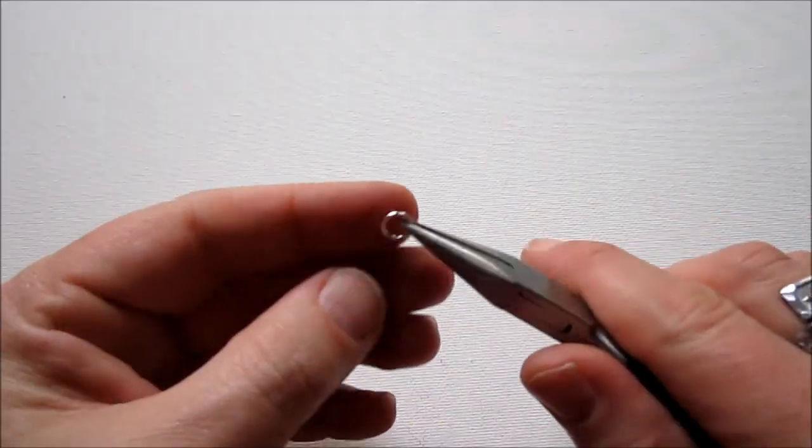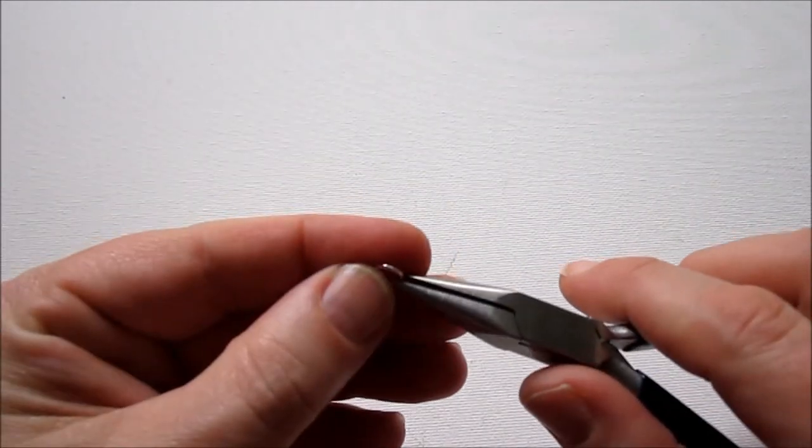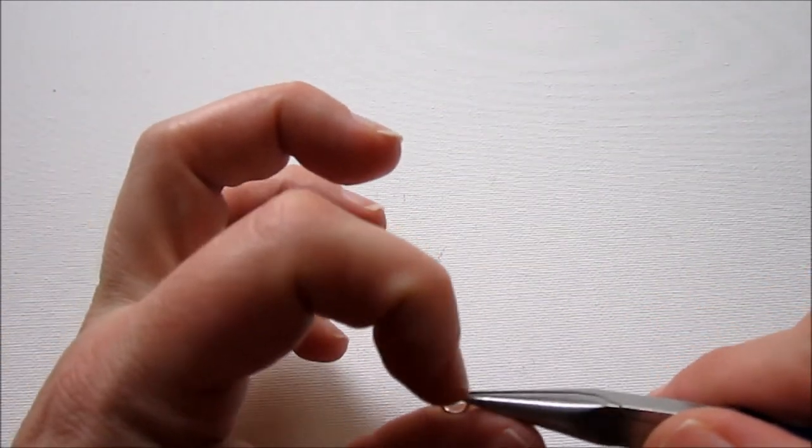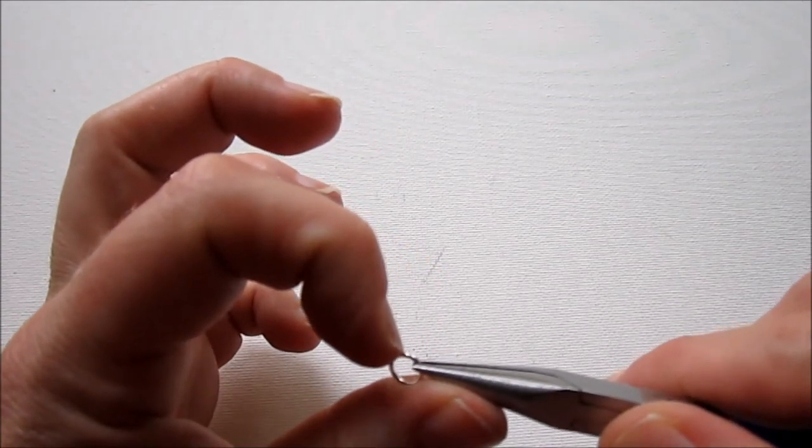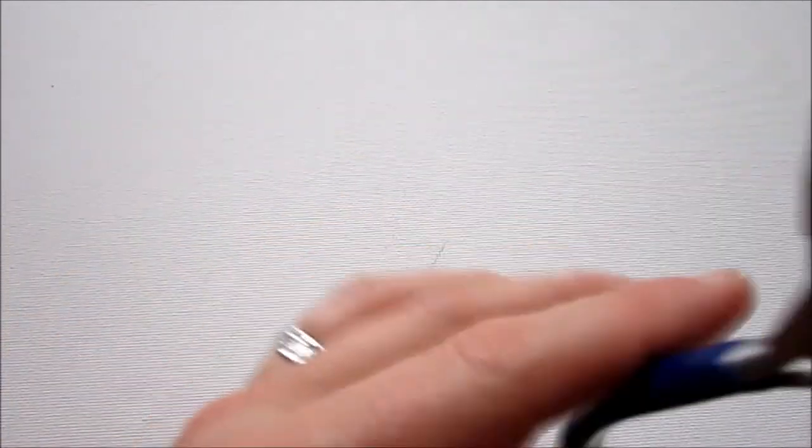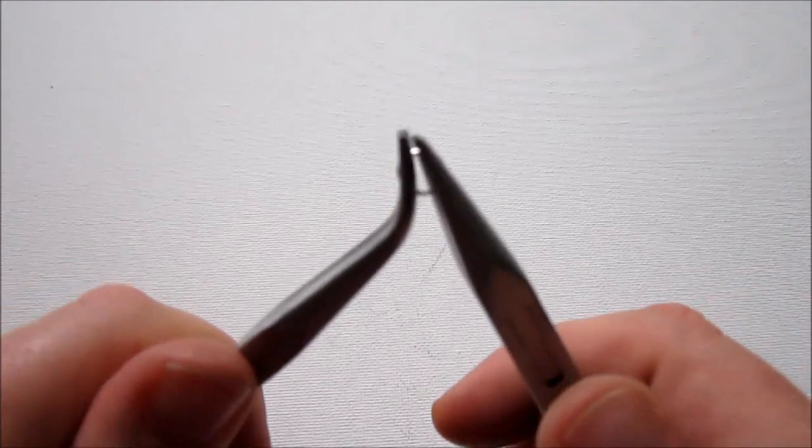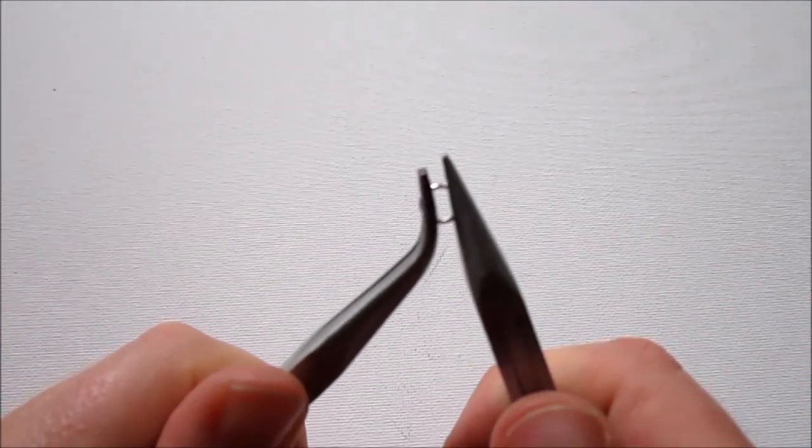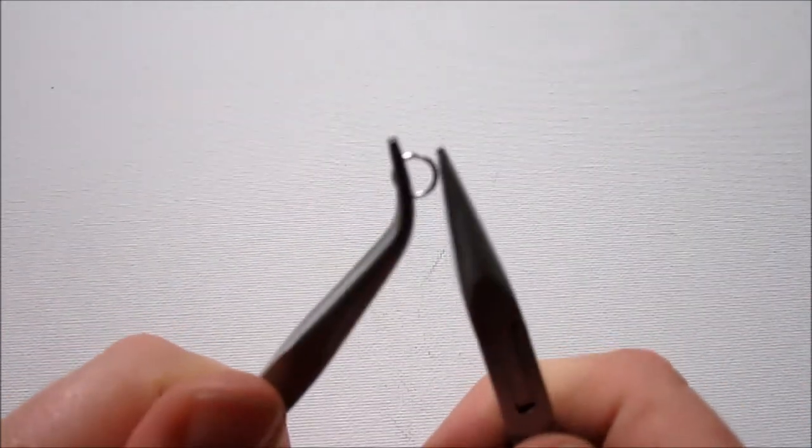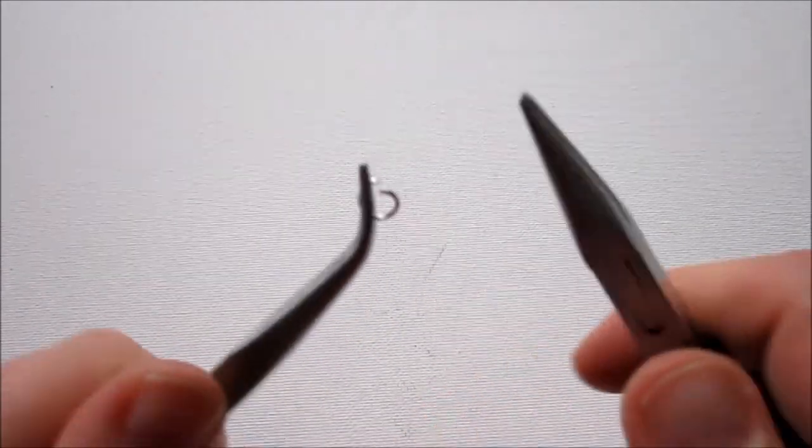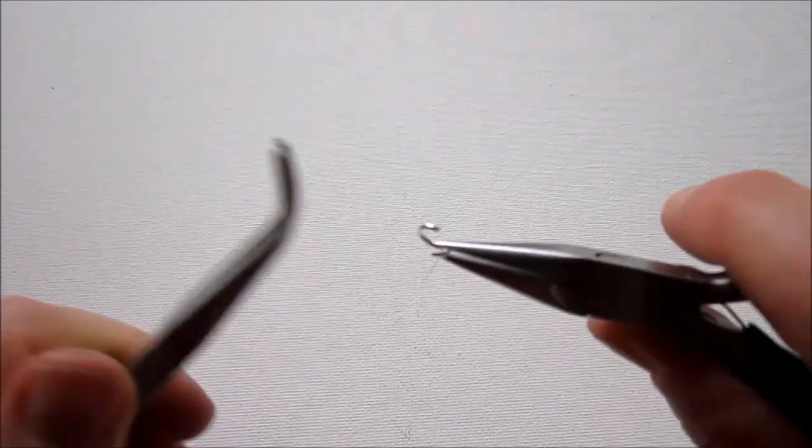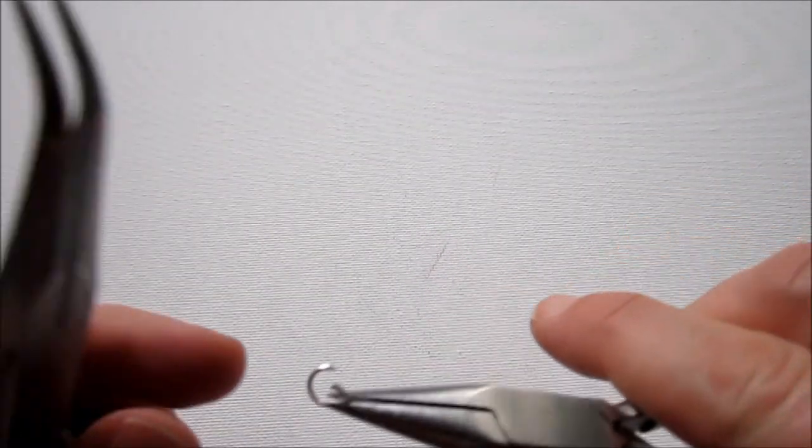And we're going to open up a jump ring. I'm going to show you quickly how to do that, in case you don't already know how to. So, first you need to find the little opening in your jump ring. And if you can't see it very well, you can usually run your finger over the jump ring until you find it. Then you're going to take your bent nose pliers and your chain nose pliers and center that opening in between them. And then with one hand, go forward and one back. You do not want to do an open motion. And you open up the jump ring.